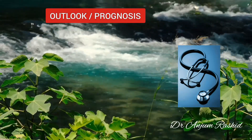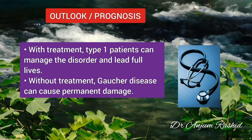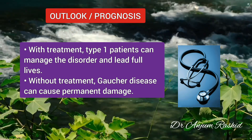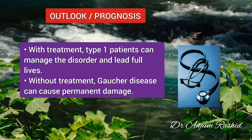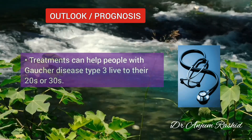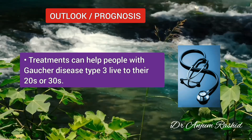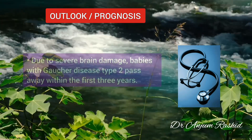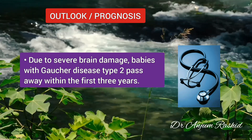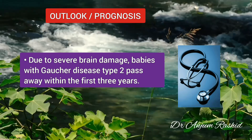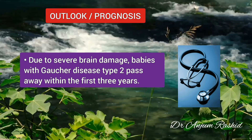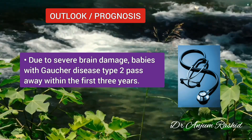What is the outlook for people with Gaucher disease? With treatment, people with type 1 can manage the disorder and lead full lives, but it is essential to work with a specialist and continue long-term treatment. Without treatment, Gaucher disease can cause permanent damage. Treatment can help people with type 3 live into their 20s or 30s, but it only addresses problems affecting the blood, organs and bones — it does not improve brain function or reverse neurological damage. Due to severe brain damage, babies with Gaucher disease type 2 typically pass away within the first 3 years.